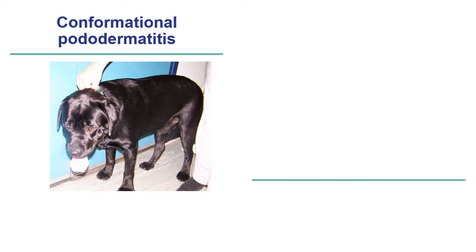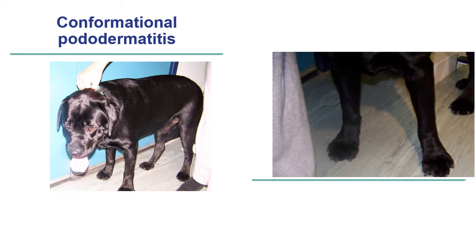This is another example, this time not a brachycephalic breed but a relatively heavy entire male Labrador Retriever, with a similar issue — in this case medial deviation of some digits — resulting in part of the interdigital skin acting as a weight-bearing surface because of the deviation of the digits and footpads.